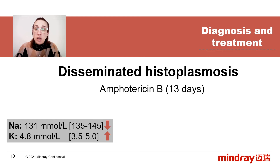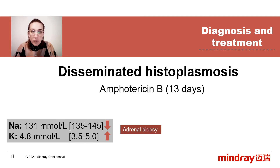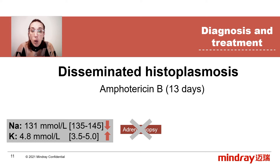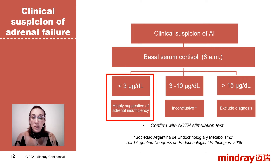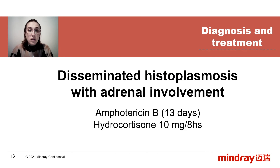Control lab results during hospitalization showed persistent mild hyponatremia and hyperkalemia. The medical team suspected adrenal insufficiency secondary to histoplasmosis. As the patient's condition did not allow an adrenal biopsy, lab staff suggested to the infectiology service to request a serum cortisol level test to assess adrenal involvement. The results obtained using electrochemiluminescence immunoassay showed that the serum cortisol level was 2 micrograms per deciliter. In this picture, we can see that this basal serum cortisol level, according to the Sociedad Argentina de Endocrinología y Metabolismo, is highly suggestive of adrenal insufficiency.